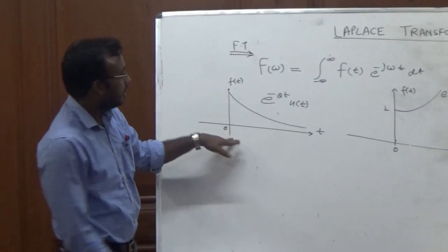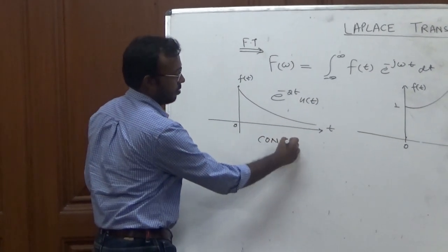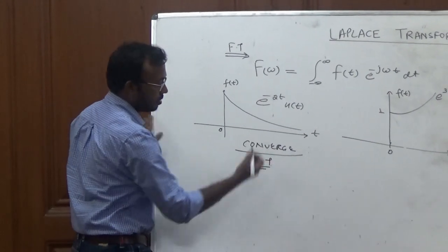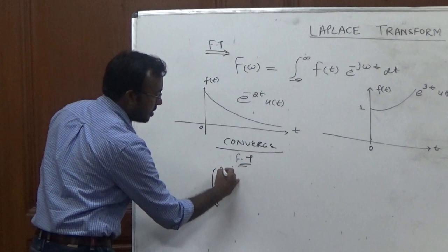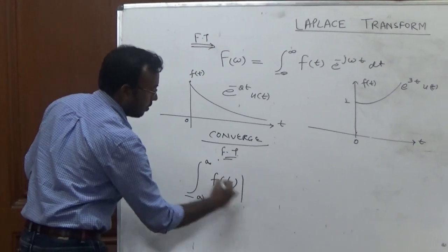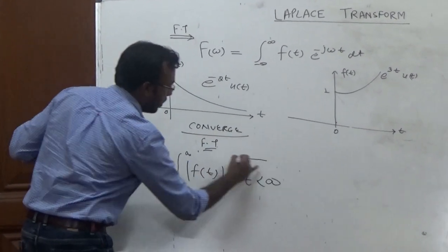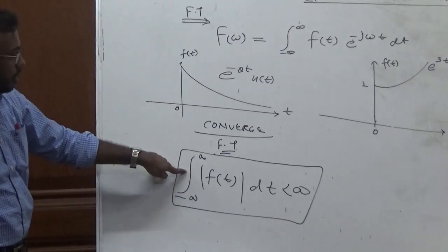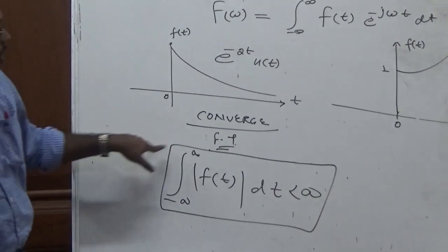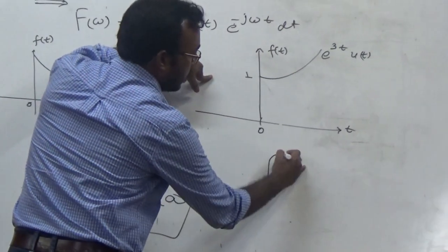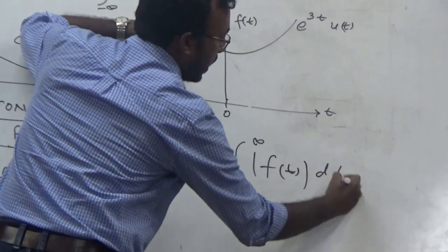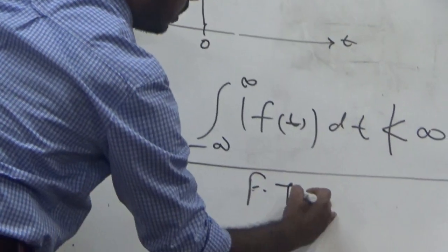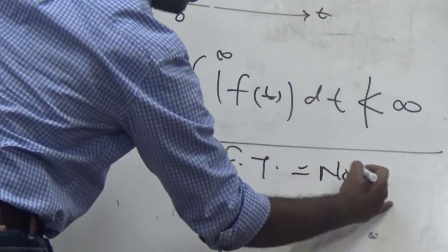You can see here — this is our convergent signal. We can easily find the Fourier Transform of this convergent signal because any signal which is absolutely integrable means we can find it by the direct method. But this signal is always absolutely integrable, while this other signal is not absolutely integrable. Here we can see that the integral of |f(t)| dt is not less than a finite value, so we cannot find the Fourier Transform of that non-integrable signal.